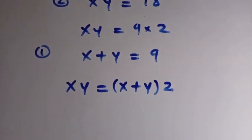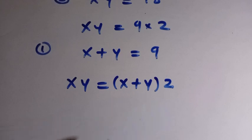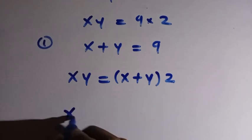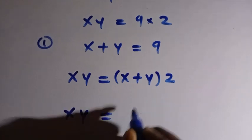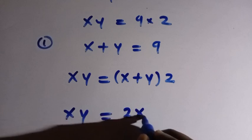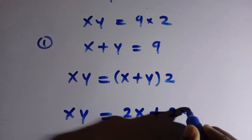And by opening these parentheses here, we have xy equals 2 times x, that is 2x plus 2 times y, we have 2y.